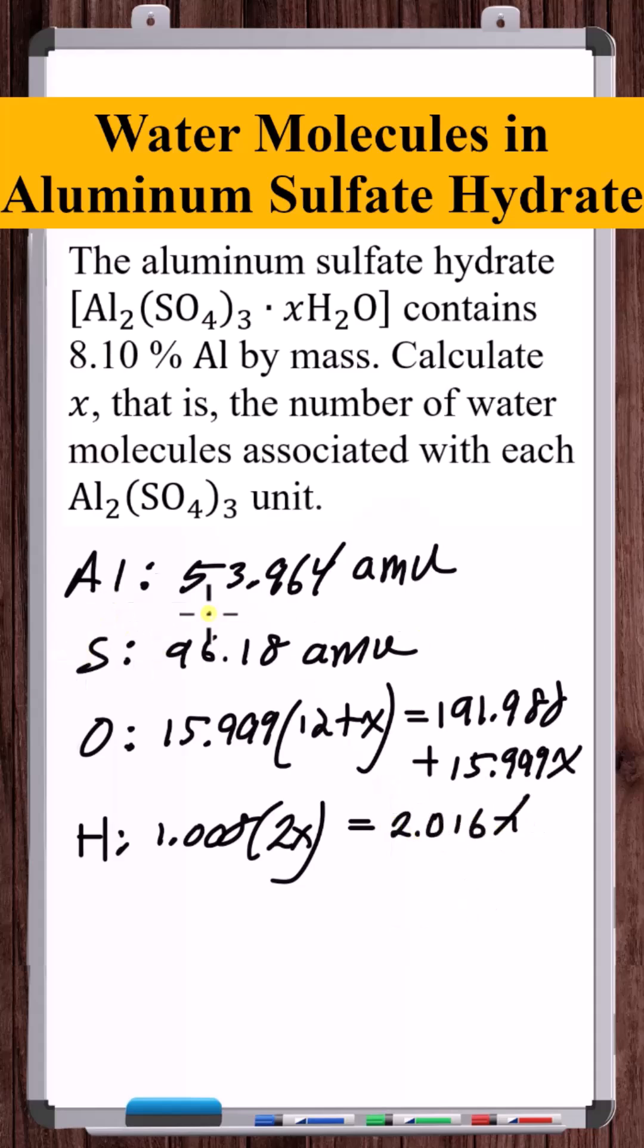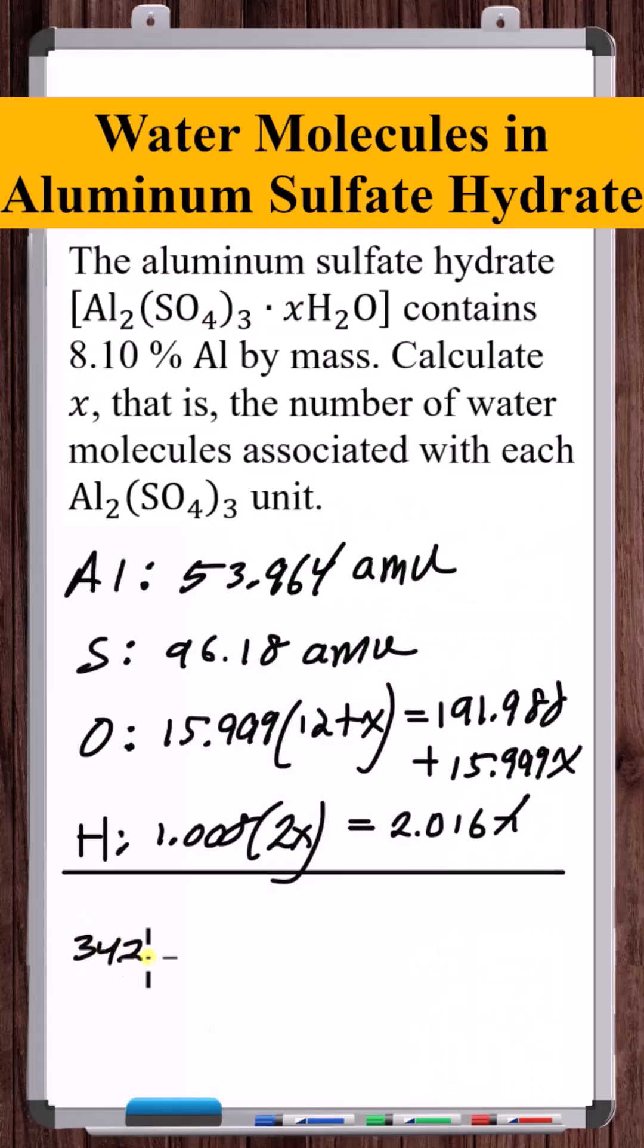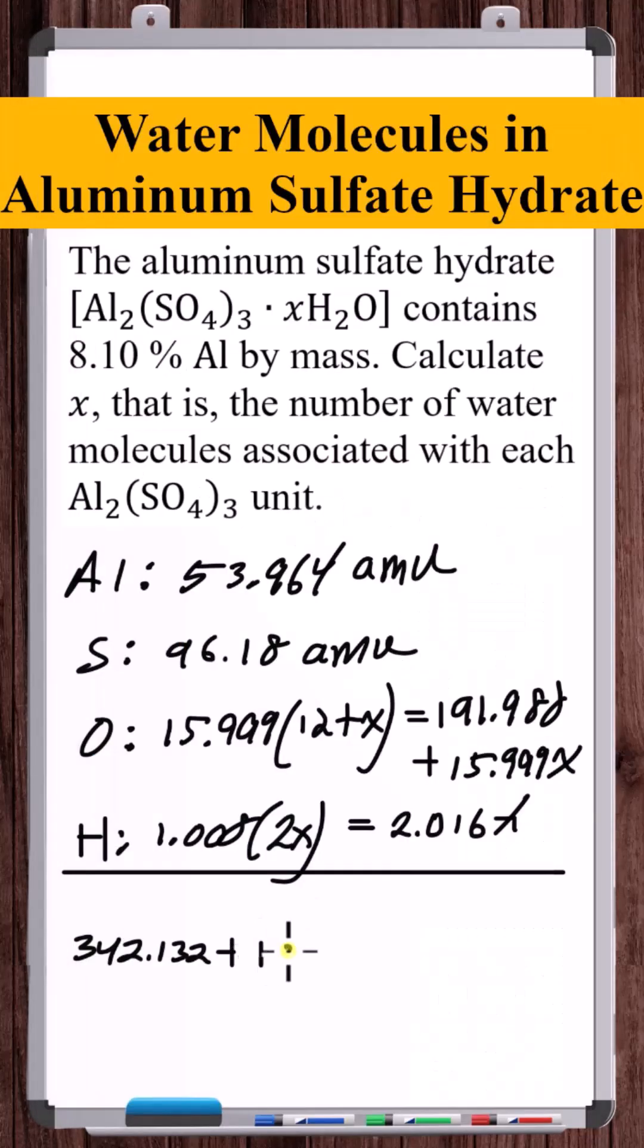Now, let's add all of these atomic masses up to get the total mass of one of these units. So 342.132 plus, and then, this is the total mass of one of these aluminum sulfate hydrate units. So what can we do with this?